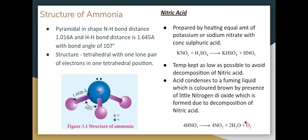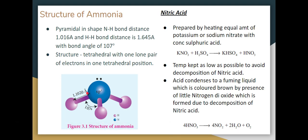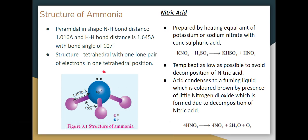Ammonia structure: Ammonia is pyramid shaped. The NH bond distance is 1.016 angstroms. The hydrogen bond ideal angle is 107 degrees, with a distance of 1.645 angstroms. The structure is tetrahedral with a lone pair of electrons.